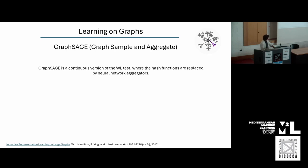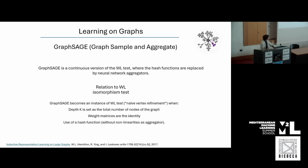As a curiosity, going back to the WL test: we can see the GraphSAGE algorithm as almost an instance of the WL test under certain conditions. If we take the depth of the GraphSAGE model as the total number of nodes in the graph, apply weight matrices as the identity, and use a hash function with no non-linearities — all of this is proved in the paper — we could potentially use GraphSAGE to identify whether two graphs are isomorphic or not.